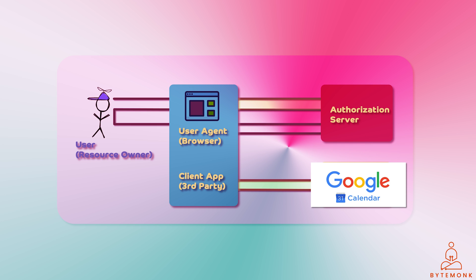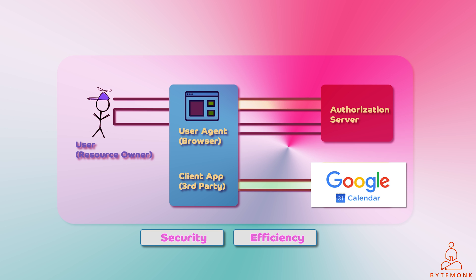The use of JWTs with OAuth 2.0 provides a number of benefits. JWTs are self-contained and can be easily verified by resource servers, making them more secure than other types of access tokens such as opaque tokens. JWTs are also compact and URL-safe, making them easy to transmit over the network, which can improve the performance of OAuth 2.0 applications.